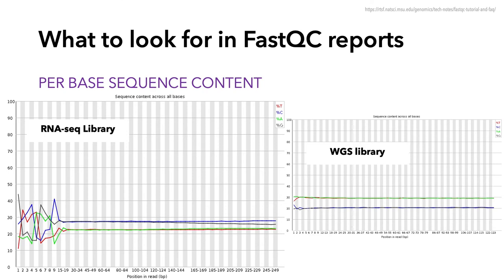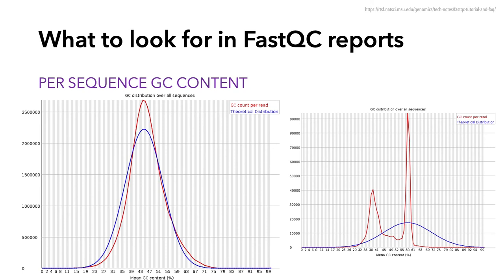The per base sequence content shows the percent of each of the four nucleotides at each position across all the reads in the sample. This is one of those plots that may fail for RNA-seq data even when the sequence is fine. Whereas in whole genome shotgun sequencing you should produce plots that are pretty flat, for RNA-seq data it's pretty common to observe this randomness in the first 10 to 15 bases. The reason is almost always due to primers annealing to the start of the reads during library preparation. This is easy to fix by just cropping out the start of the read — it's normal, nothing to be worried about.